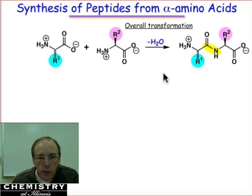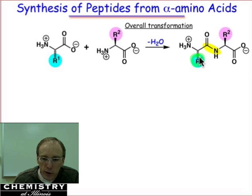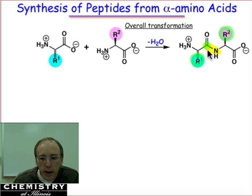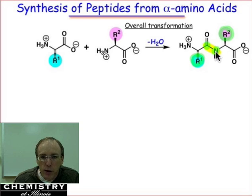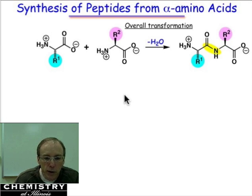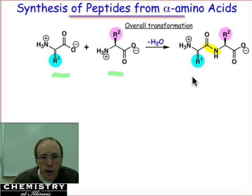For the simplest case where we bring two amino acids together — one bearing side chain R1 and a second bearing side chain R2 — we can bring them together so that the carboxylic acid of the amino acid bearing R1 combines with the amino group of the amino acid bearing R2. But there's something we need to worry about, because if we just combined these two amino acids and hoped for the best, there are actually several other peptide bonds that could form.